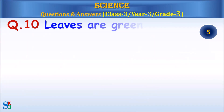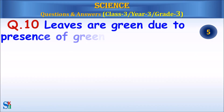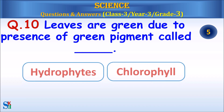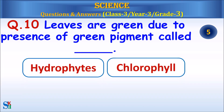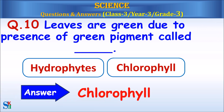Question 10: Leaves are green due to the presence of a green pigment called hydrophytes or chlorophyll? Answer: Chlorophyll.